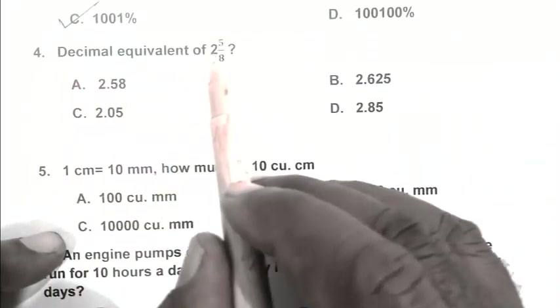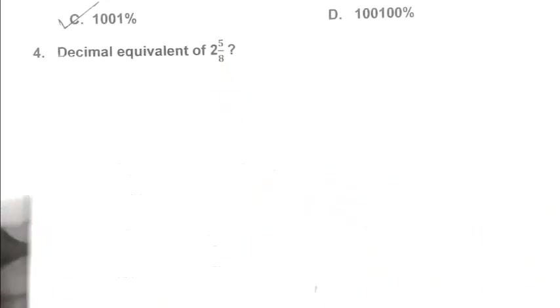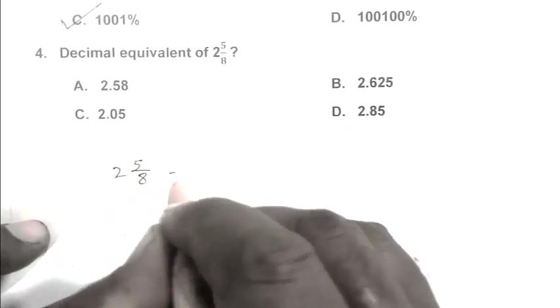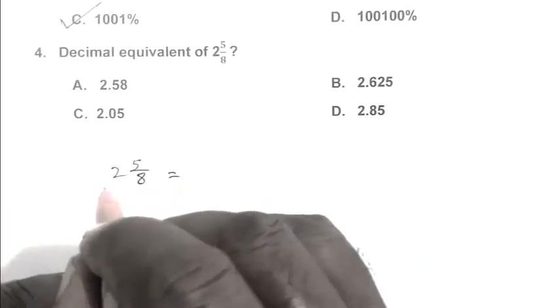Question number 4. Decimal equivalent of 2 and 5/8. So 2 and 5/8, we convert it into improper fraction. So 16 plus 5 is 21 upon 8.